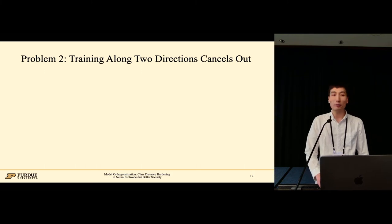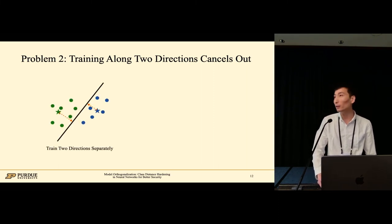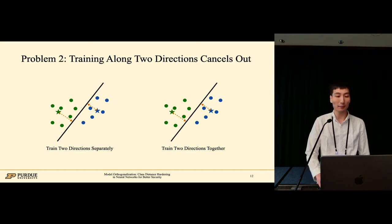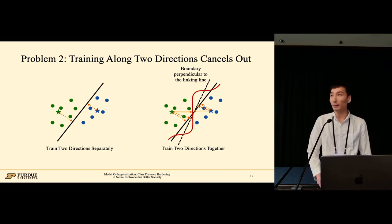The second problem of the straightforward hardening idea is that training along two directions of a pair may cancel each other out. Let's look at the decision boundary if we train the two directions separately. If we push the distance from the green side, the boundary moves to the other side, which leads to a smaller distance for the blue class. If we push the distance from the blue side, the boundary moves back to its original position and the distances are not enlarged for both classes. Now let's look at training the two directions simultaneously. The boundary is rotated as we are pushing it from two directions together. When the training converges, we have the largest distance for both directions. The boundary is perpendicular to the line linking the two class centers.